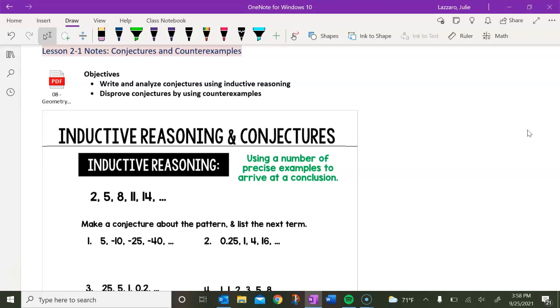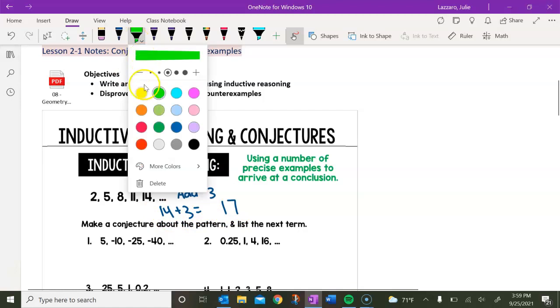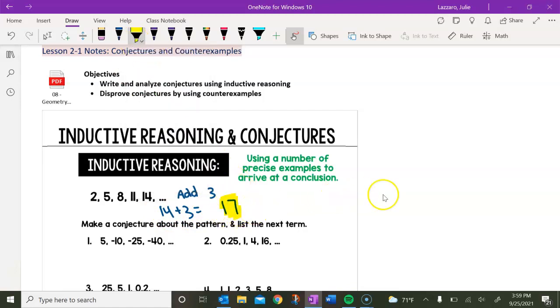Then take a look at this first example with me, please. So we've got the numbers 2, 5, 8, 11, and 14. So here is my question. What is going on here with the numbers? And what is the next number in this pattern, in this sequence? So I'm seeing that each time we are adding three to the previous number to get the next number. So I'm saying that we are adding three. And following that logic, I would do 14 plus three, and I'm getting 17. So 17 is the next number in this sequence.